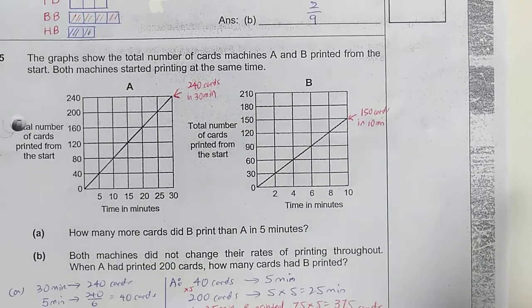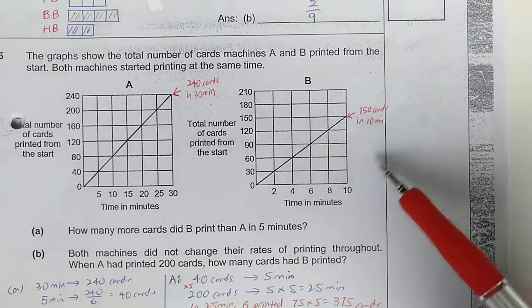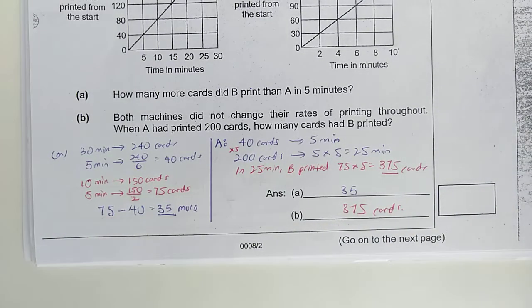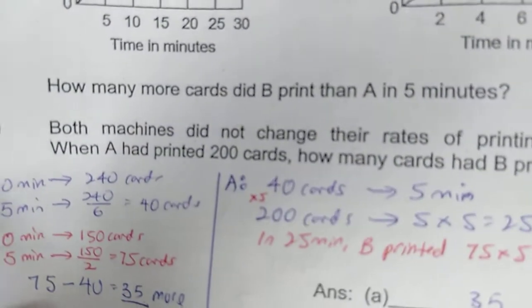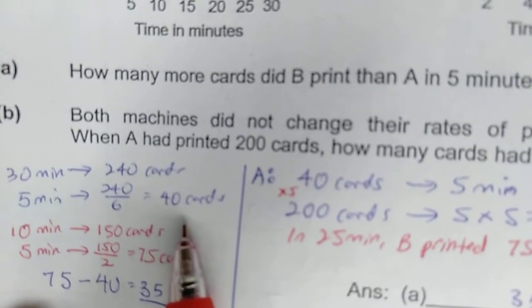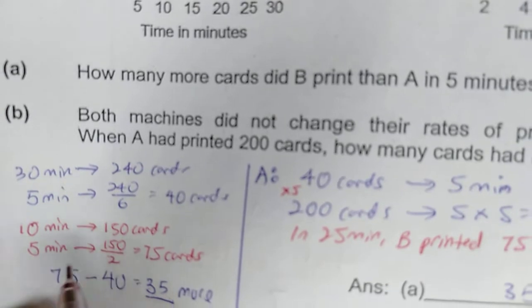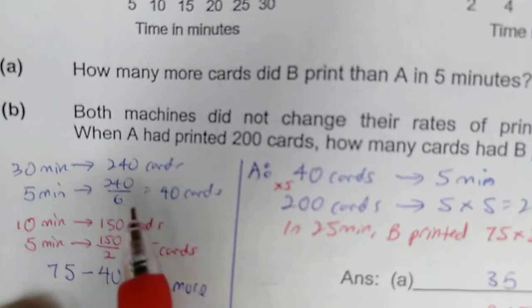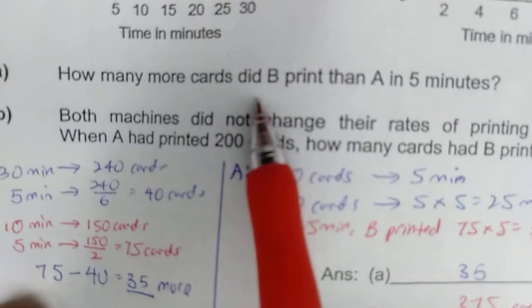The graph shows here, so let's find out at this portion here. At 30 minutes, you have 240 cards being printed. At 10 minutes, you have 150 cards being printed. So, if you look at it here, you will find out that in 30 minutes, 240 cards are printed. So, in 5 minutes, you divide 240 by 6. You have 40 cards being printed in 5 minutes by printer A. Now, for printer B, in 10 minutes, 150 cards are printed. So, in 5 minutes, same, 75 cards are printed. So, the difference in them will tell you 35 more cards were printed by printer B than by A.